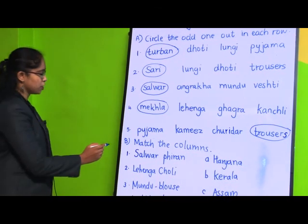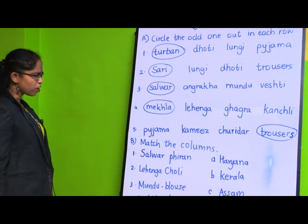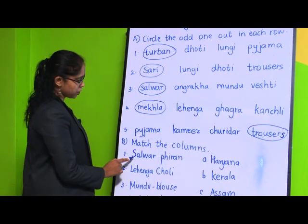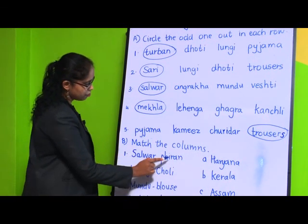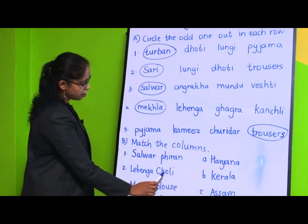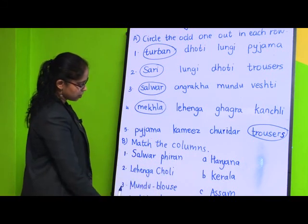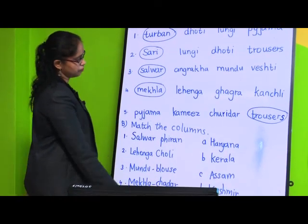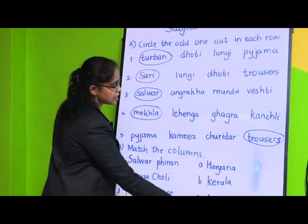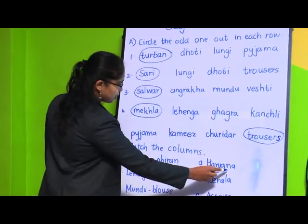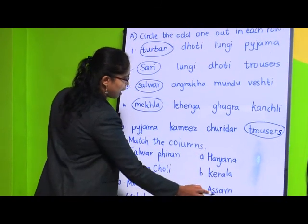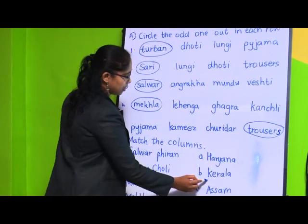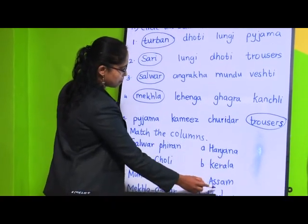Now let's solve question number B: Match the column. First: salwar firang. Second: lehenga choli. Third: mundu blouse. Fourth: mekhla chadar. The states to match are Haryana, Kerala, Assam, and Kashmir.